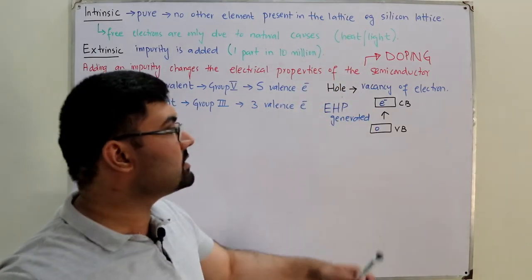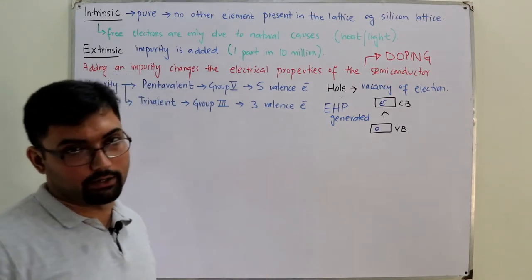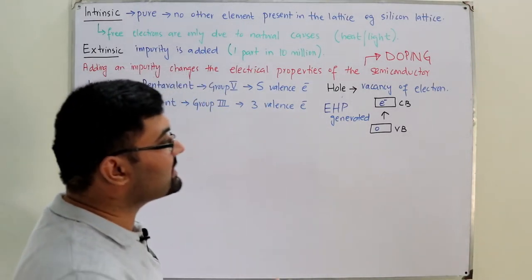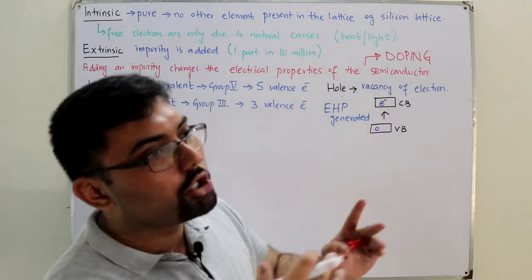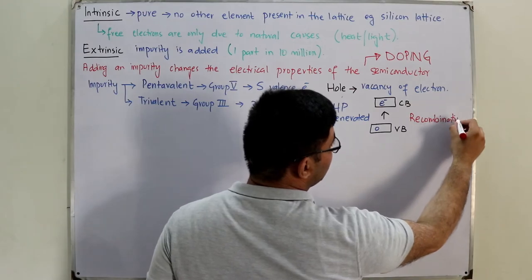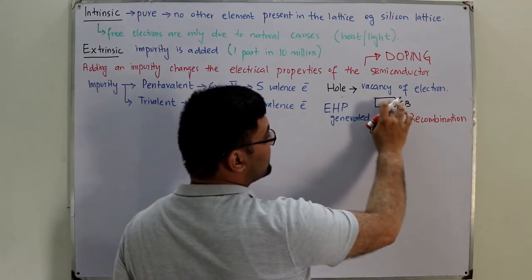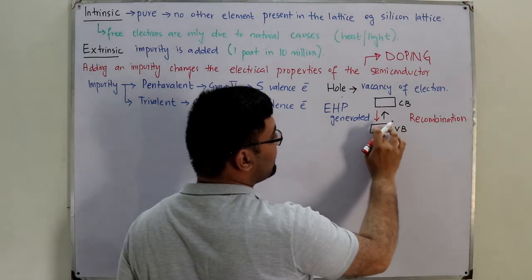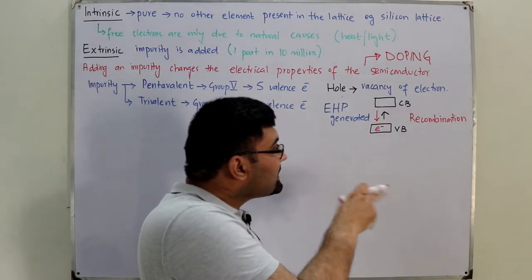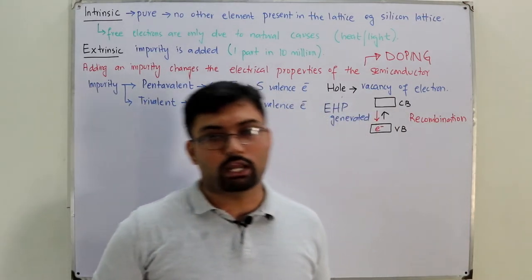An electron is in the conduction band and a hole is present in the valence band, so an electron-hole pair is generated. There is also the concept of recombination — when the electron in the conduction band loses energy and comes back to the valence band, filling the place it had previously left empty. This is called recombination of the electron-hole pair.